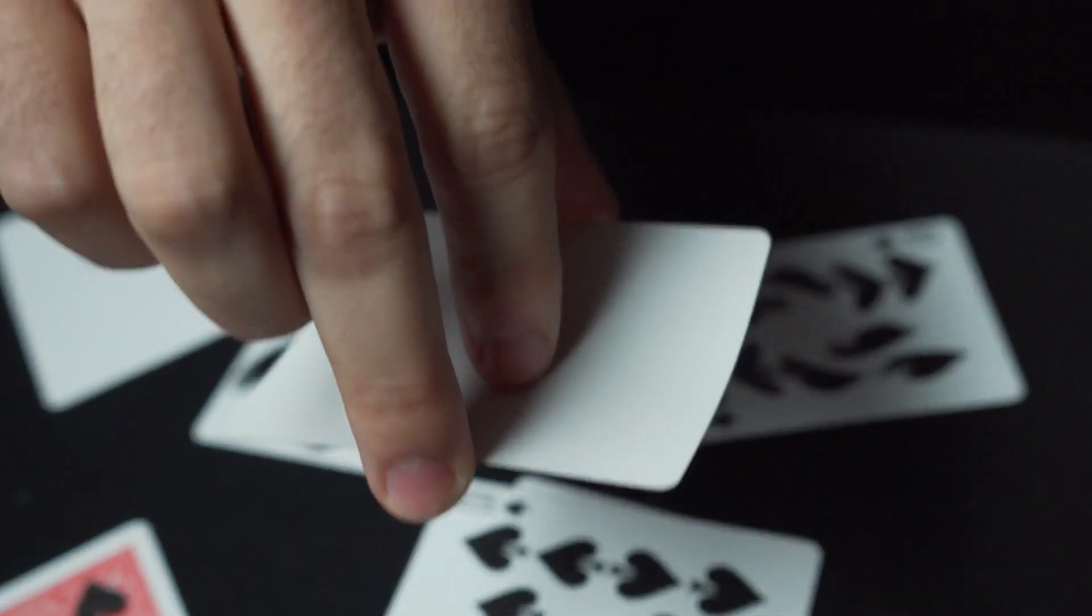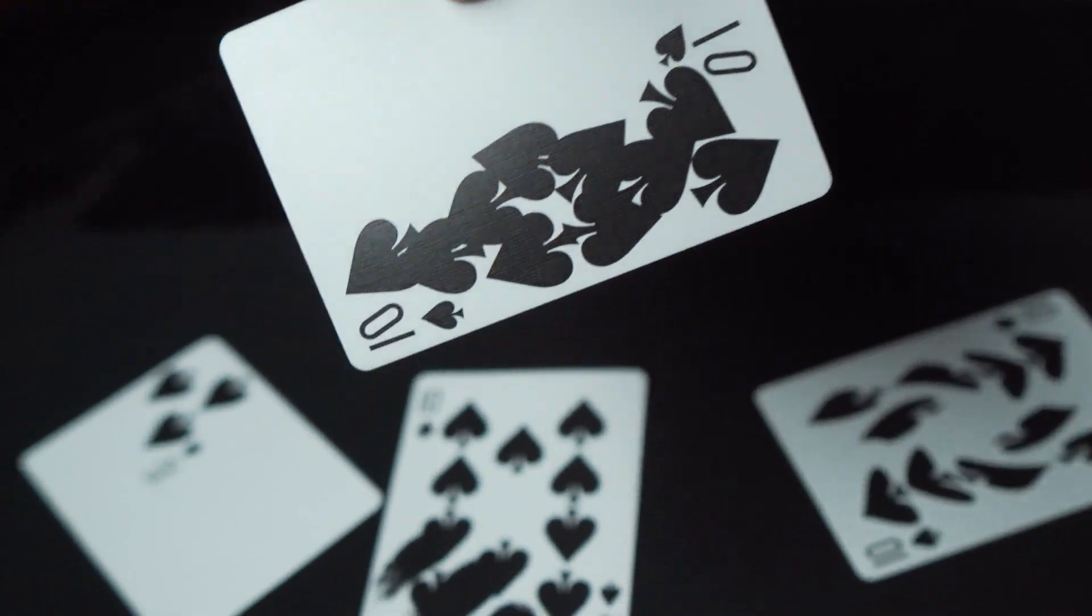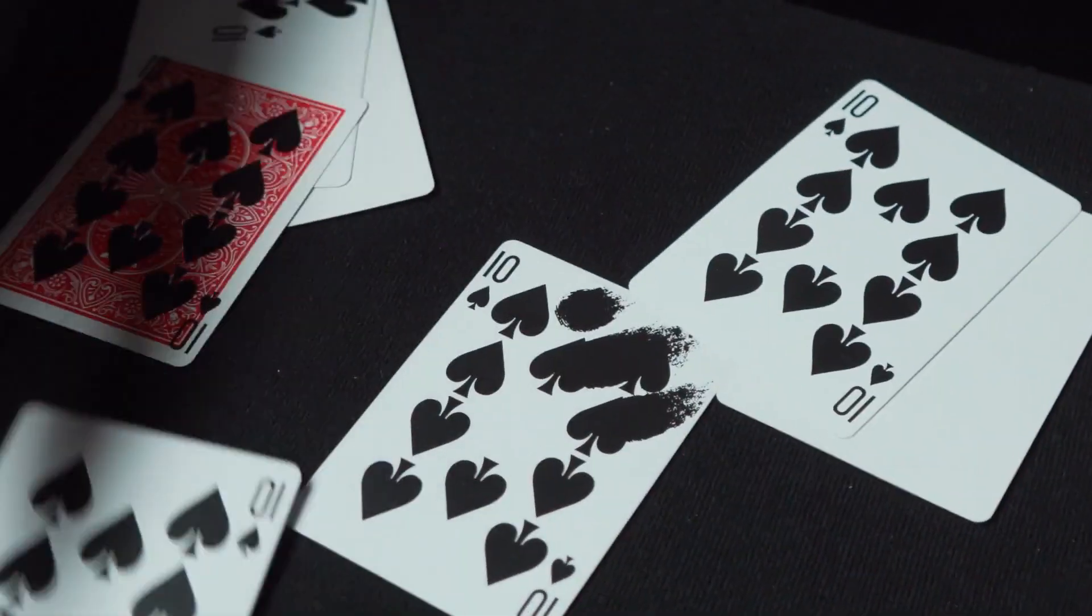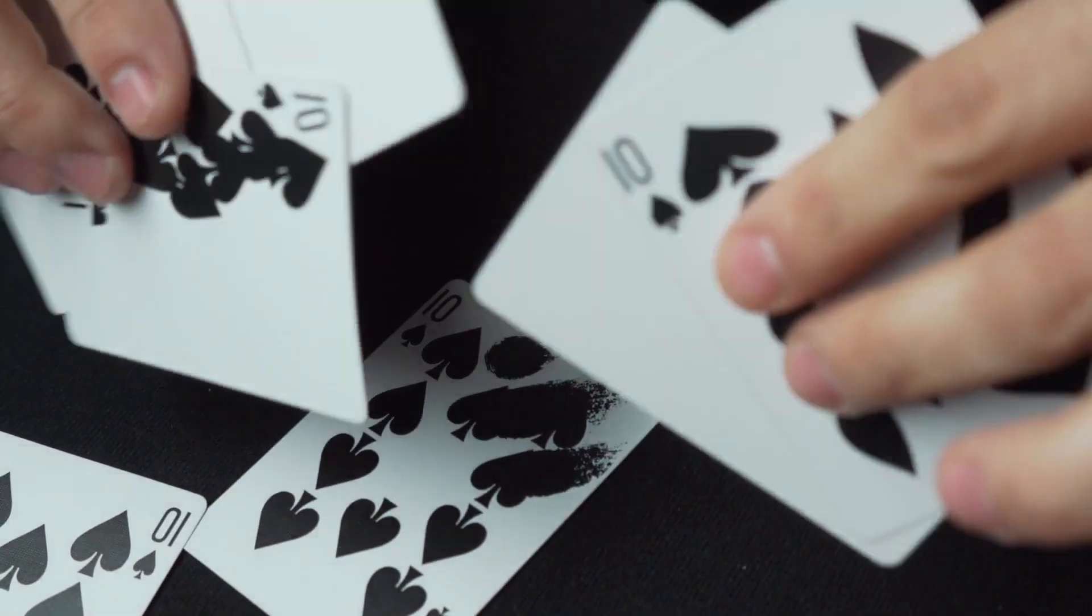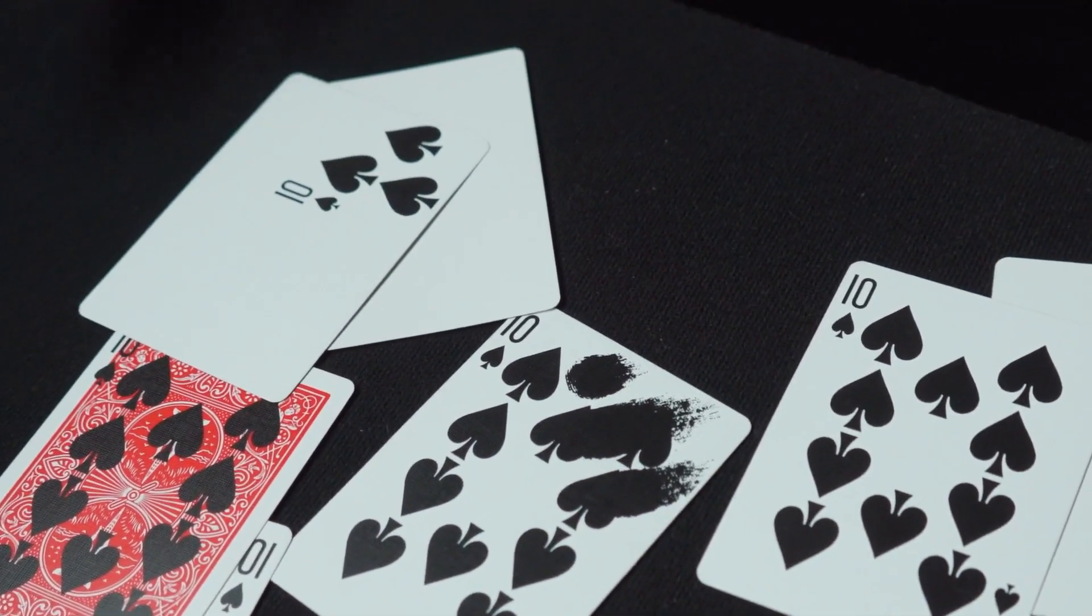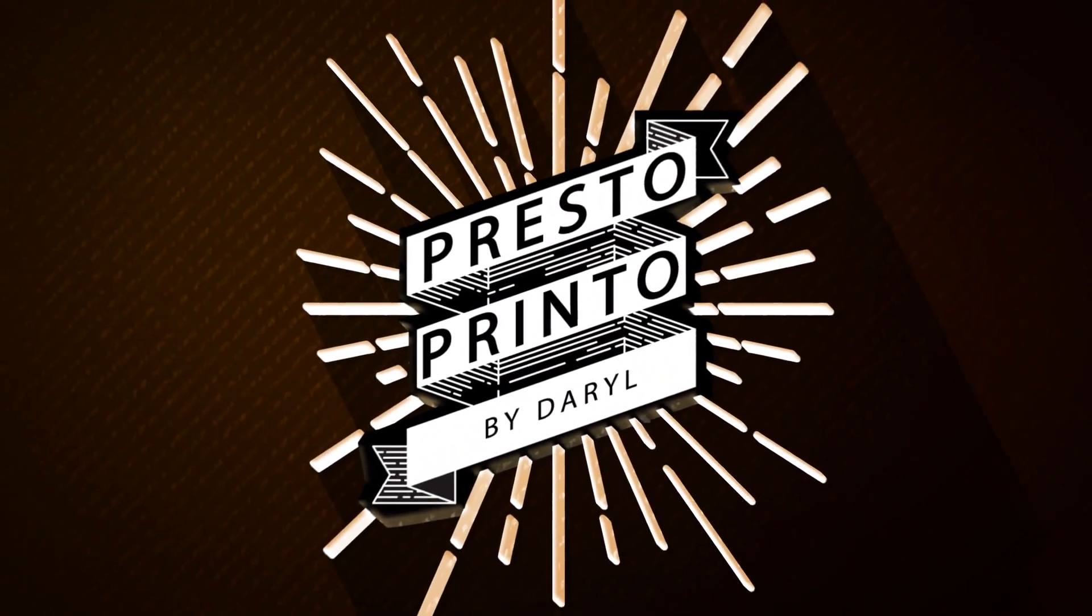Rather than spin it, I like to snap all the printing down to one side, and at this point your spectators can examine absolutely everything. Leave a lasting impression with Daryl's Presto Printo.